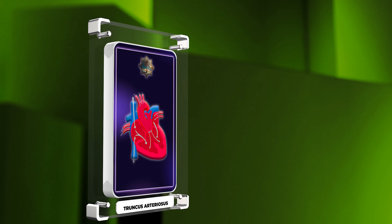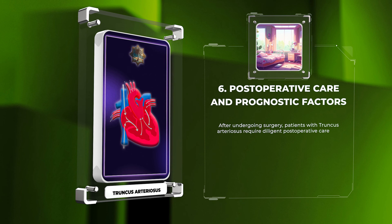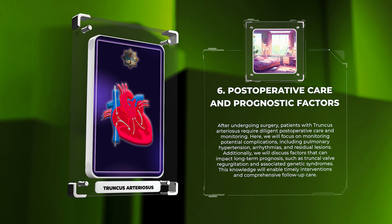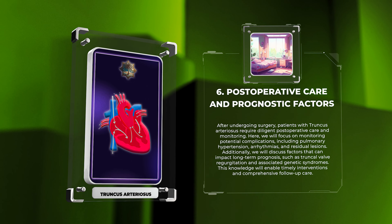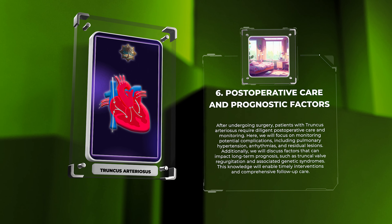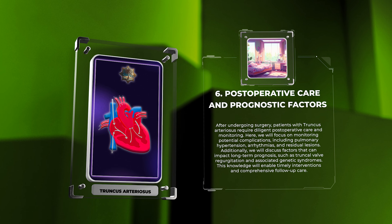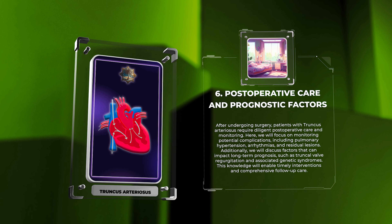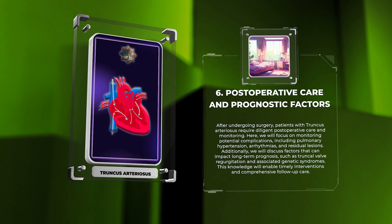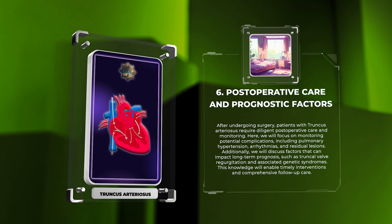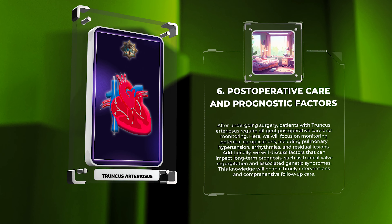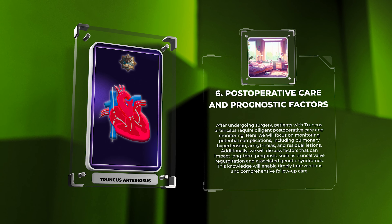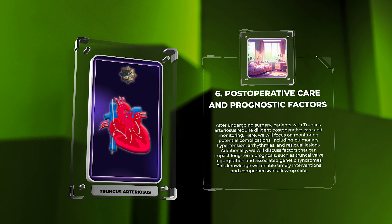After undergoing surgery, patients with truncus arteriosus require diligent postoperative care and monitoring. Here, we will focus on monitoring potential complications, including pulmonary hypertension, arrhythmias, and residual lesions. Additionally, we will discuss factors that can impact long-term prognosis, such as truncal valve regurgitation and associated genetic syndromes. This knowledge will enable timely interventions and comprehensive follow-up care.